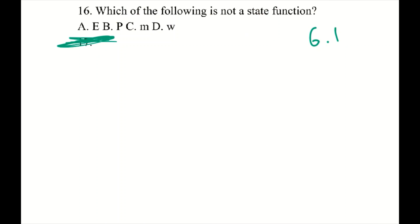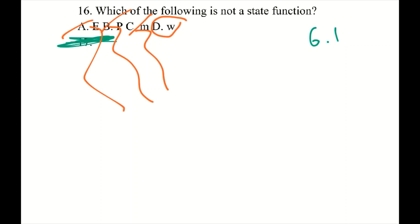Number 16: which is not a state function? Energy, pressure, and mass are state functions — they depend only on the current state. Work depends on the path taken, not just the state, so it is not a state function. Answer: D. Thanks for watching, and I know there was a lot of math involved, but we learned a lot. Have a nice day.